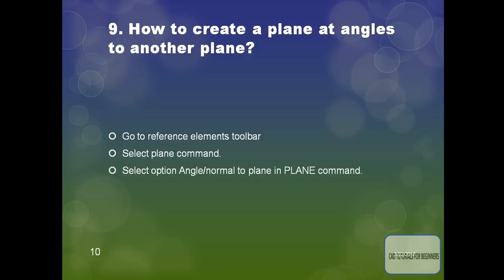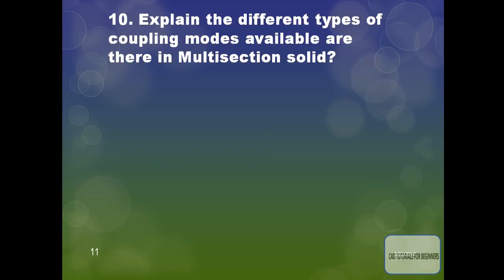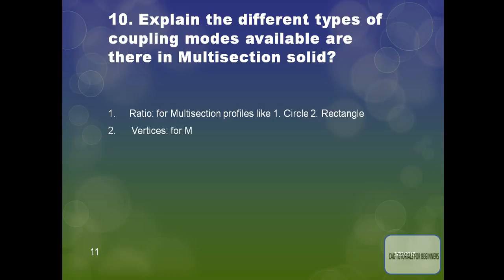Explain the different types of coupling modes available in multi-section solid. The first is Ratio — for multi-section profiles like one circle and one rectangle, you need to provide the coupling mode as Ratio. The second is Vertices — for multi-section profiles like circle-circle, and also valid for polygon and rectangle profiles.